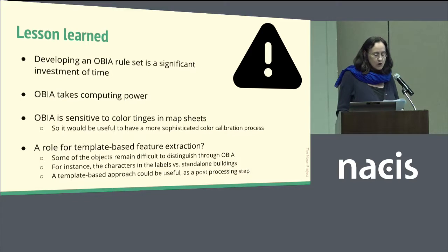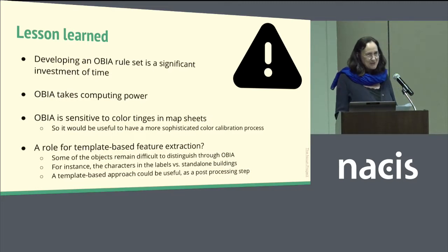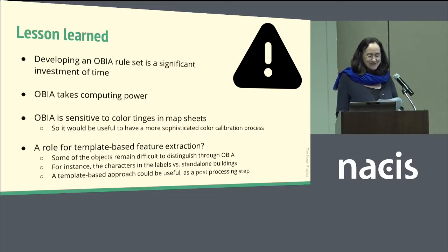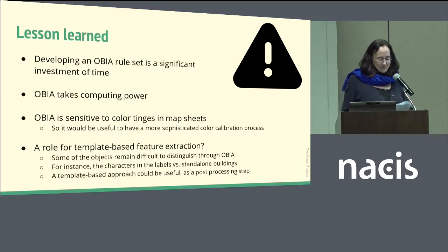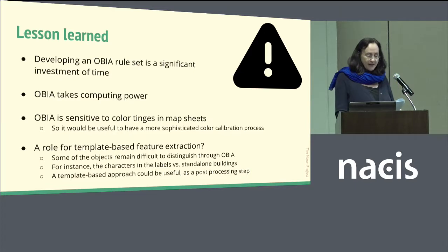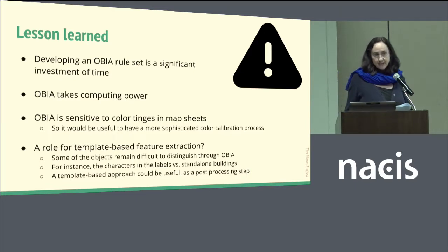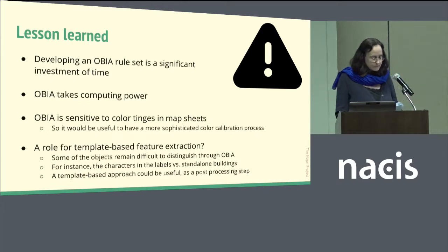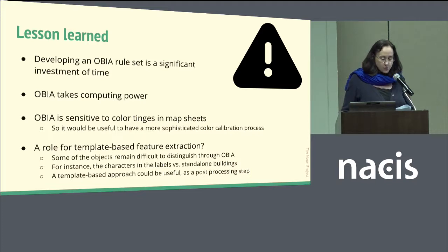In terms of lessons learned, developing an OBA ruleset is a significant investment of time, even more so than I thought originally. OBA takes quite a lot of computing power, which I learned the hard way as I was trying to run this analysis on my laptop. And finally, some objects remain difficult to distinguish through OBA — for instance, the characters that appear in labels versus the symbols for small standalone buildings; I ended up eliminating both in my analysis. To handle those elements fully, a template-based approach could be useful, applied as a post-processing step after the main OBA analysis.